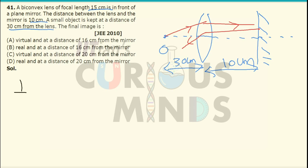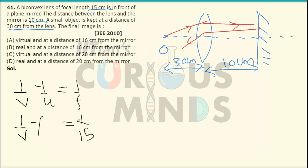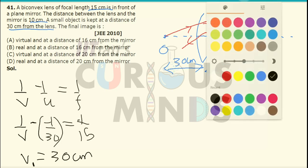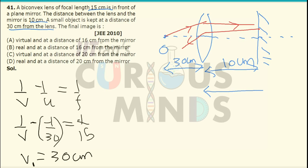Using the lens formula 1/V − 1/U = 1/F, starting with the convex lens: the focal length is +15 cm (convex lens) and the object distance is −30 cm (on the left-hand side). Solving, V comes out to be 30 cm. So the distance between the lens and the first image formed is 30 cm.